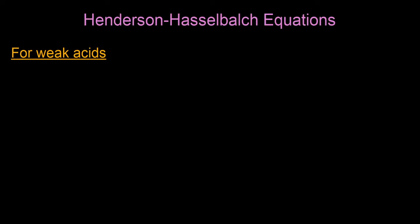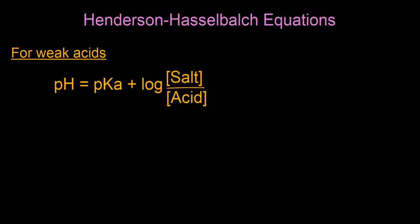For your Henderson-Hasselbalch equations, there are two sets to keep in mind. The first is for weak acids. In weak acids, the equation is given as: pH = pKa + log([salt] / [acid]), where the square brackets denote concentration. So the concentration of the salt is divided by the concentration of the acid. This is the equation you'd use for, say, acetic acid together with the salt of the acid, which would be sodium acetate.